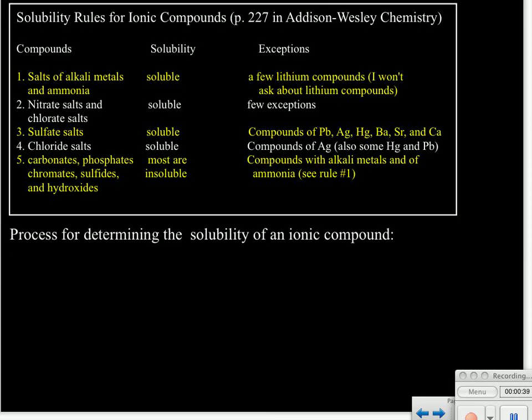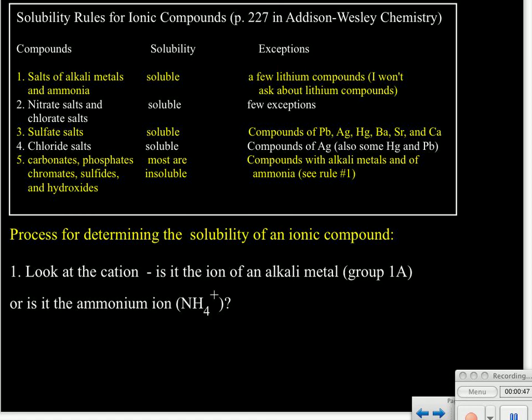The steps for determining whether an ionic compound is soluble or not: first, look at the cation — that first ion in the compound. If that ion is an alkali metal, meaning from group 1A, or if it's the ammonium ion (NH₄⁺), then that compound will be soluble. Rule number one says they're all soluble.